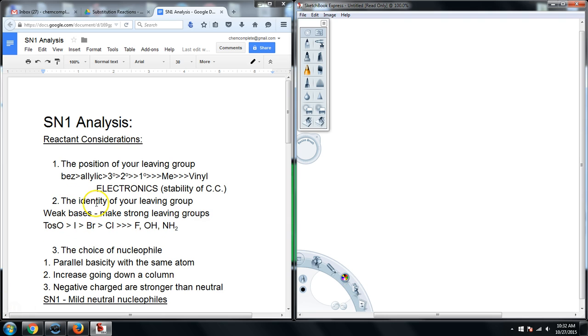So after that, we take a look at the identity of the leaving group. Again, this followed the same trend that we saw in SN2. So the tosylate is the supreme leaving group because it has the resonance stability when it leaves in solution. Then we have iodine, bromine, chlorine. The other ones, because they're strong bases in solution, would not make good leaving groups unless they're protonated and they leave in a neutral form.